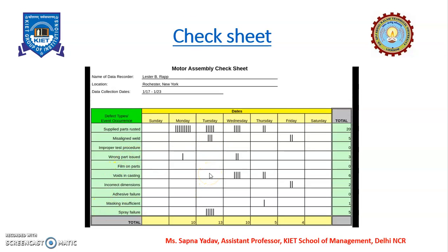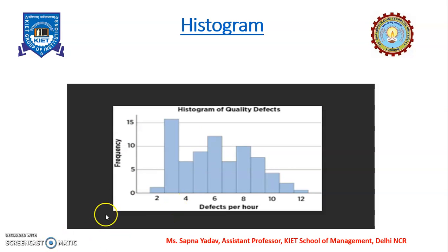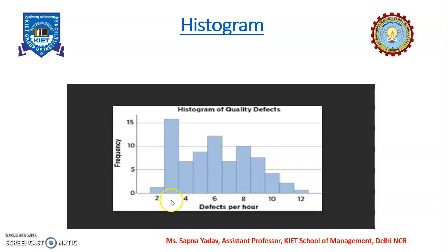Now move on to the next tool — the histogram. A histogram is simply the pictorial representation of frequency with respect to defects. Suppose we have defects numbered 2 through 12 — that is 12 defects — and frequency is shown on the y-axis. With the help of this histogram, it is very clear that defect number 3 is the most common defect and defect number 12 is the rarest defect. So we can identify which defects are more common and which are less common.